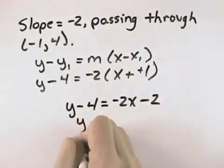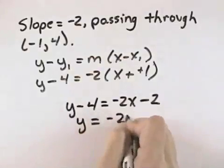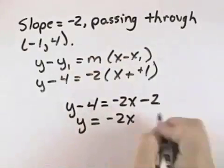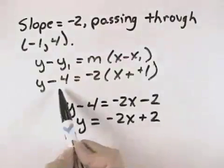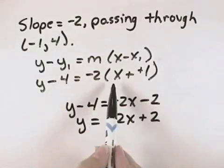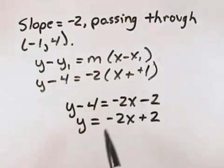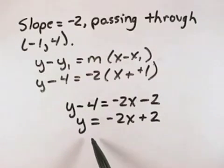Then adding 4 to both sides, we get y equals negative 2x. Adding 4 to a negative 2 gives you plus 2. So the two forms are y minus 4 equals negative 2 times the quantity x plus 1, or in slope-intercept form, that's equivalent to the line y equals negative 2x plus 2.